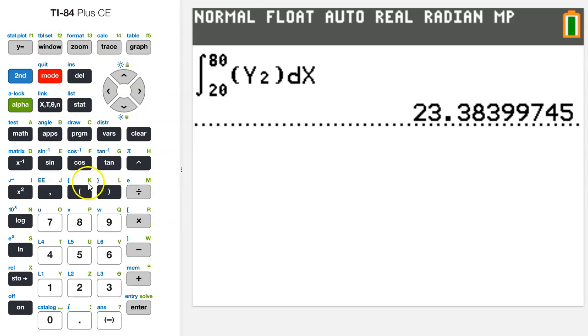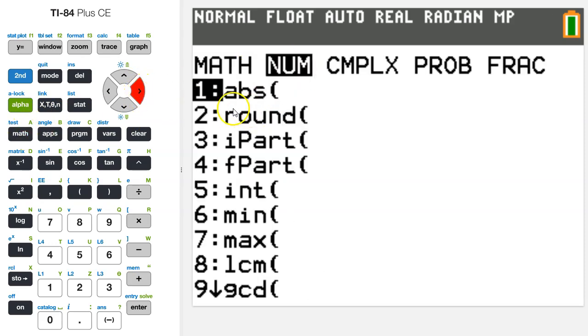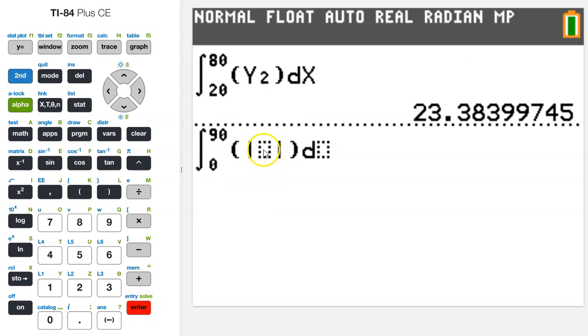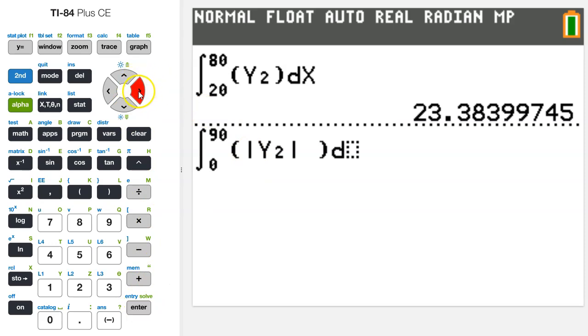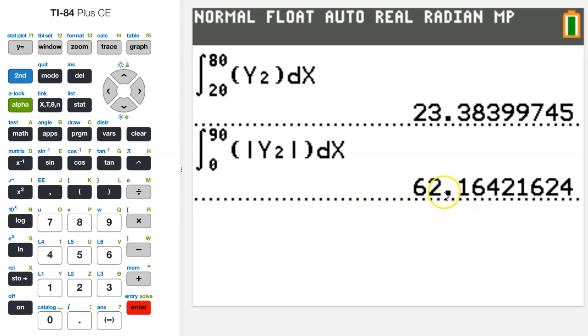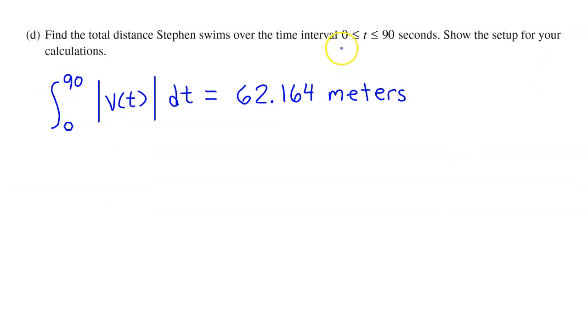Again, to evaluate a definite integral, we do math 9. We are integrating from 0 to 90. Now we need the absolute value of velocity. For the absolute value function, we need to hit the math button and switch over to the number menu. And right there at the top, that abs is absolute value. So choose that. So now we need the velocity function in here. Again, instead of typing in the entire thing, let's just use y2, because that's where we have typed in the velocity function. We can access that by hitting vars, yvars, enter for function, and choose y2. And that's it. Just throw a dx on the end of this. And there you have it. Kabam! I'm going to be real honest with you. That calculation took about 20 seconds. So on the time interval from 0 to 90 seconds, Stephen swam a total distance of 62.164 meters.